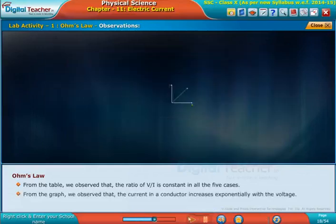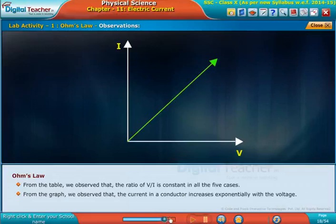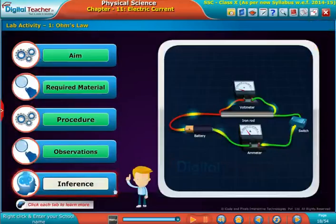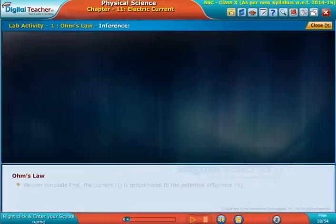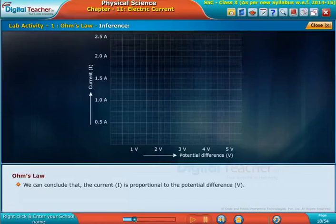From the graph, we observed that the current in a conductor increases exponentially with the voltage. Inference: We can conclude that the current I is proportional to the potential difference V. The slope of the line gives the value of the resistance R.